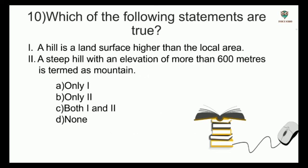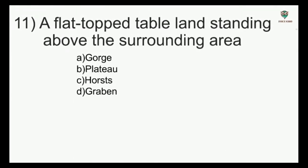Which of the following statements are true? Statement 1: a hill is a land surface higher than the local area. Statement 2: a steep hill with an elevation of more than 600 meters is termed as a mountain. Options: only 1, only 2, both 1 and 2, none — and the answer is both 1 and 2.